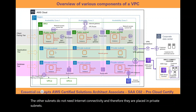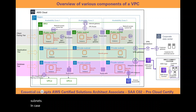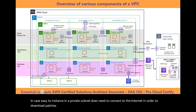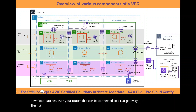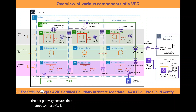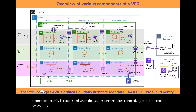In case an EC2 instance in a private subnet needs to connect to the internet to download patches, your route table can be connected to a NAT gateway. The NAT gateway ensures that internet connectivity is established only when the EC2 instance requires it. However, the internet cannot connect directly back to the EC2 instance without the right permission.